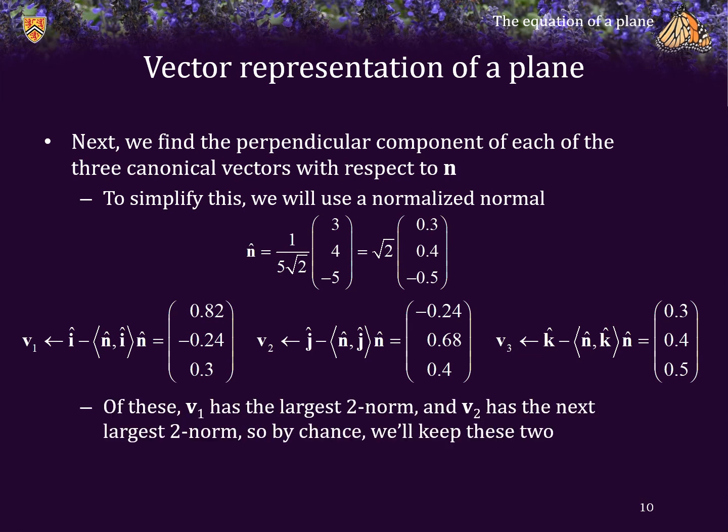We can calculate the 2-norm of each of these three, and it happens by chance that V1 has the largest 2-norm, V2 has the second largest. So, we will discard V3.